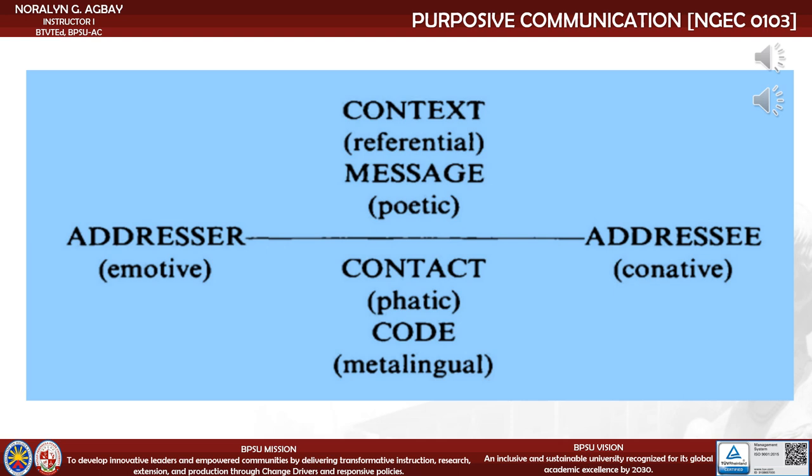Jacobson defined six functions of language, according to which an effective act of verbal communication can be described. He advocated that there are six elements or factors in an act of verbal communication: a context, an addresser, an addressee, a contact between an addresser and addressee, a common code, and a message. The model may be linear, but it emphasizes the different factors that affect the communication process.